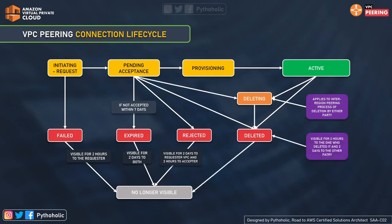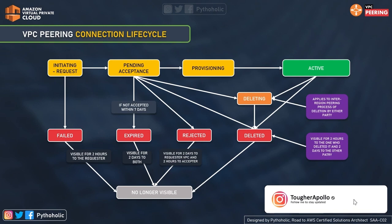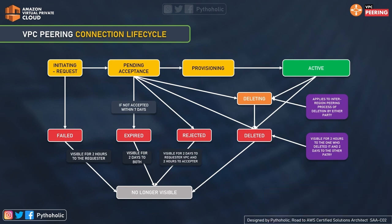The deleted state can also be reached by either party when they send a delete request while the status is active, or by the owner of the accepting VPC that raised a delete request. The most important thing to remember here is that VPC peering connections remain visible to the party that deleted it for two hours and visible to the other party for two days. If the VPC peering connection was created within the same AWS account, the deleted request remains visible for two hours.